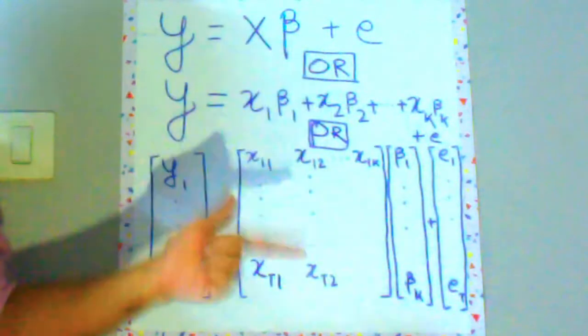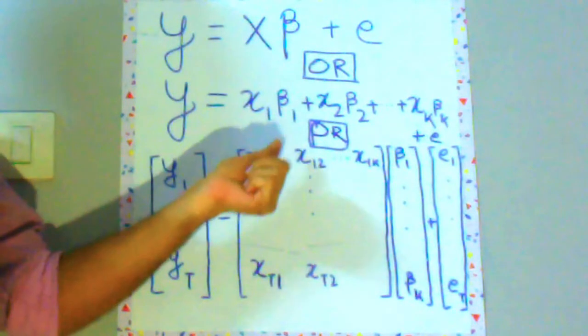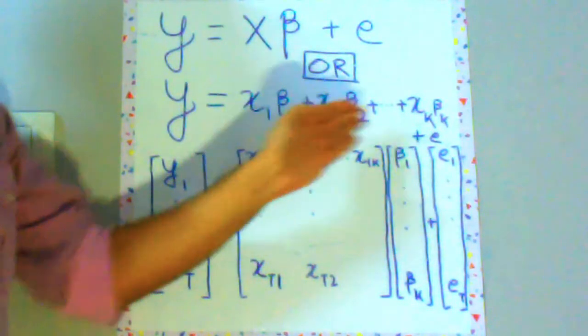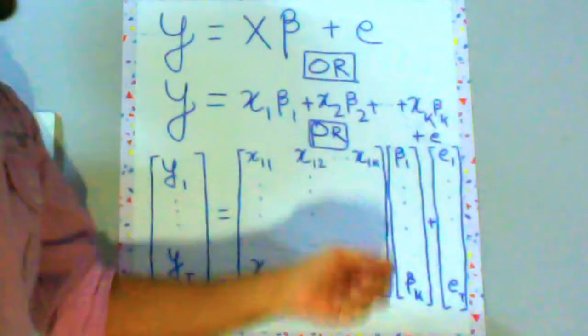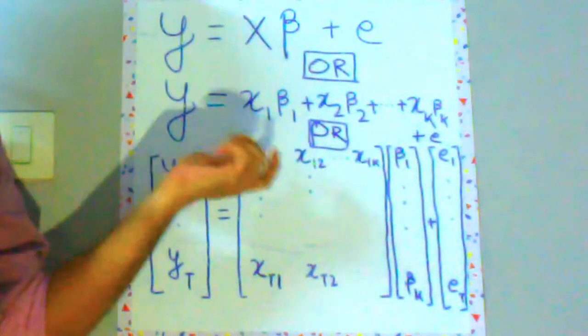Or you can also expand this X beta to write y is equal to x1 beta 1 plus x2 beta 2 and so on to xk beta k where k minus 1 is the number of predictors because x1 will be 1 for you.